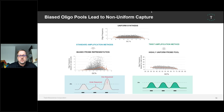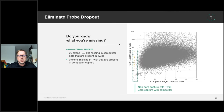You can save up to half of the costs, or you could sequence the same number of samples with a much higher sequencing depth. This very good uniformity also helps for CNV analysis, which we will hear about later, because if you have a more even distribution, the CNV algorithm works better.